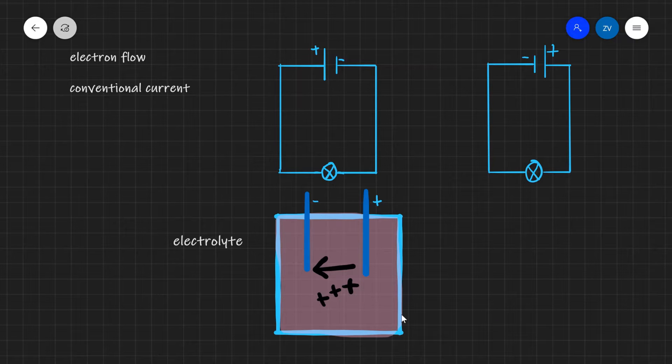Hi everyone, welcome back to Z-Physics. Today we're going to be talking about the difference between the direction of electron flow and the direction of conventional current.